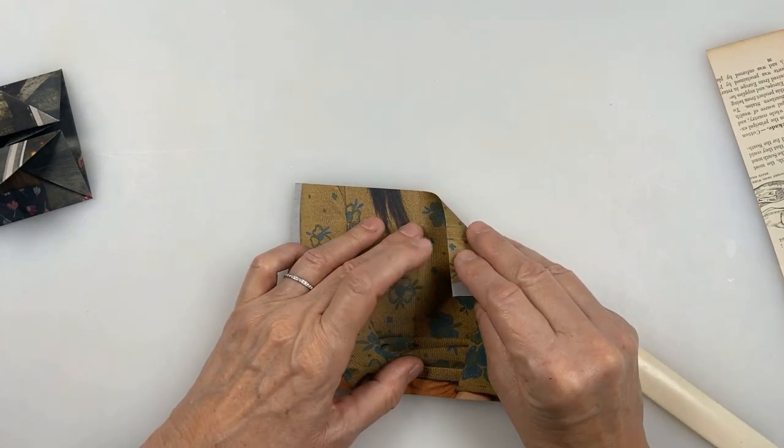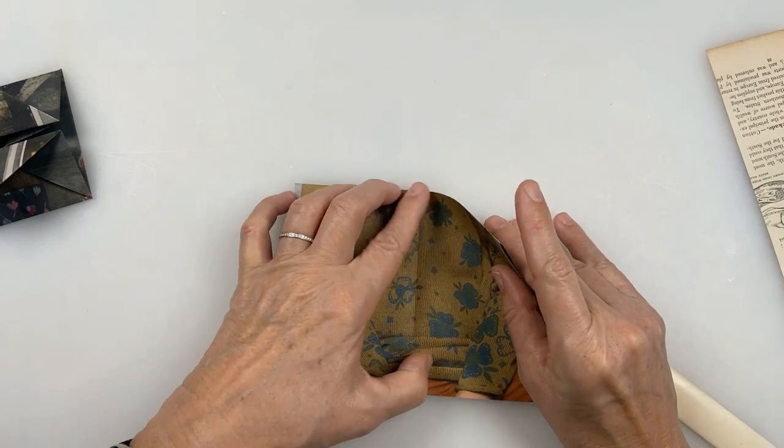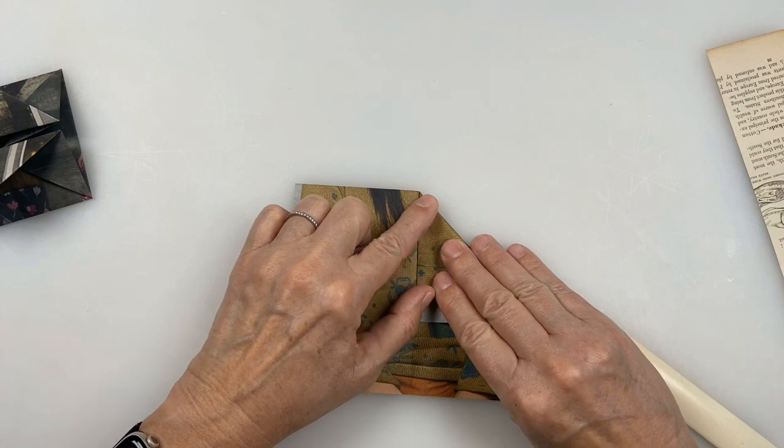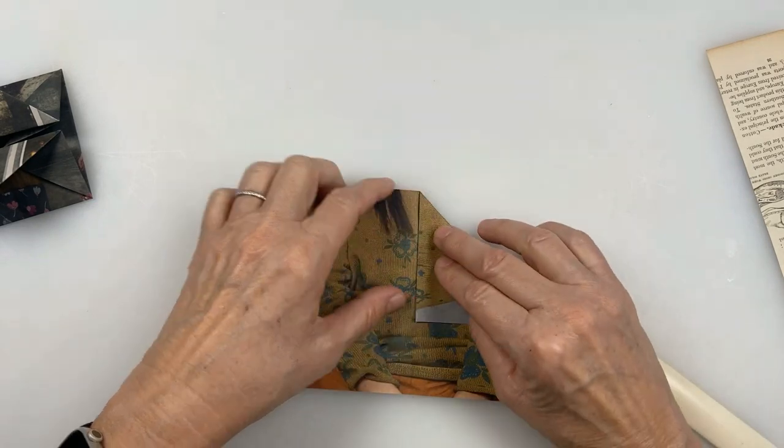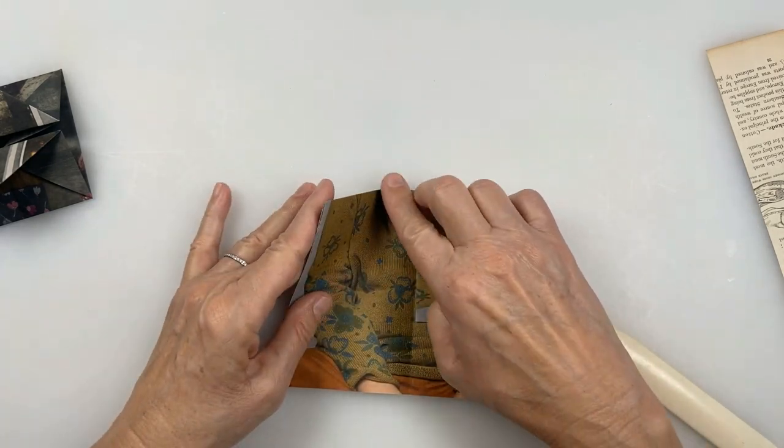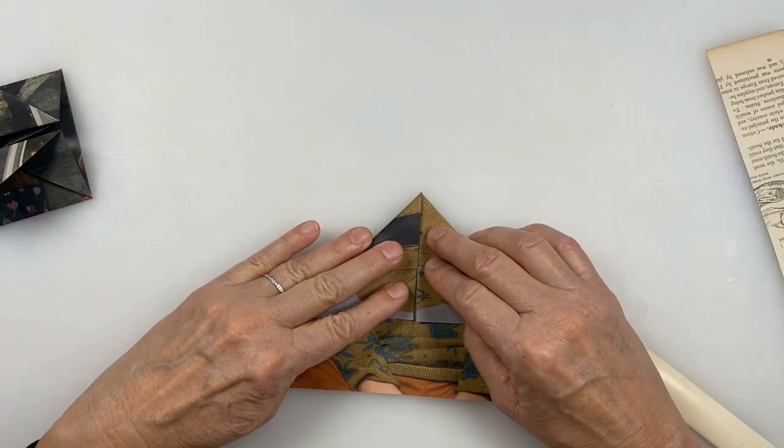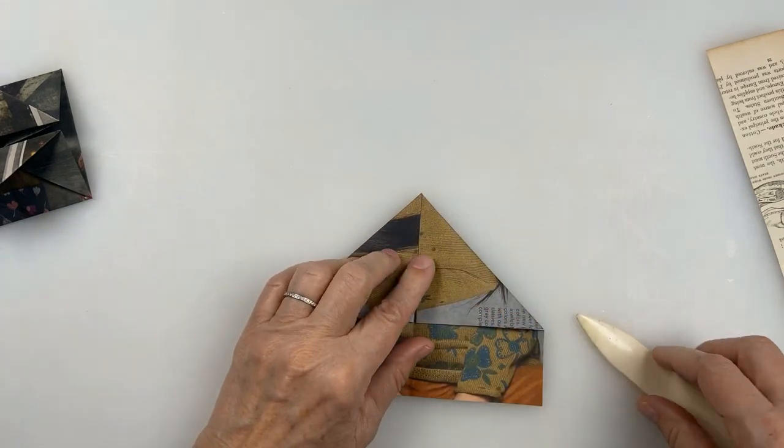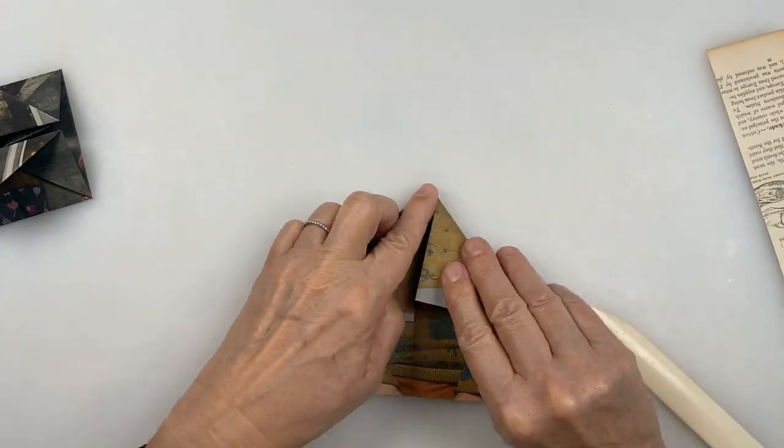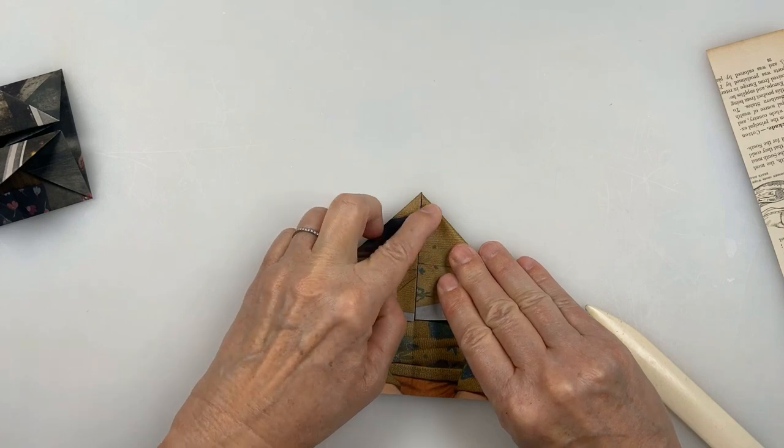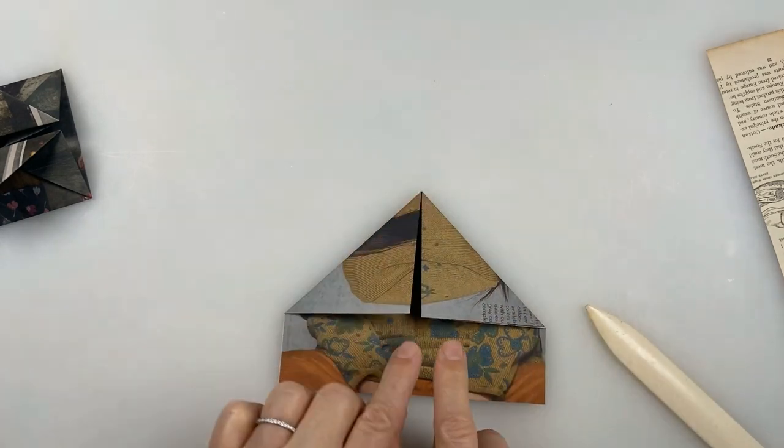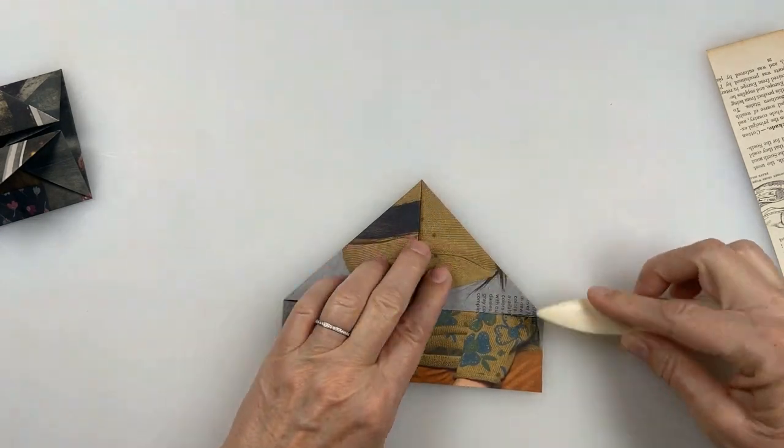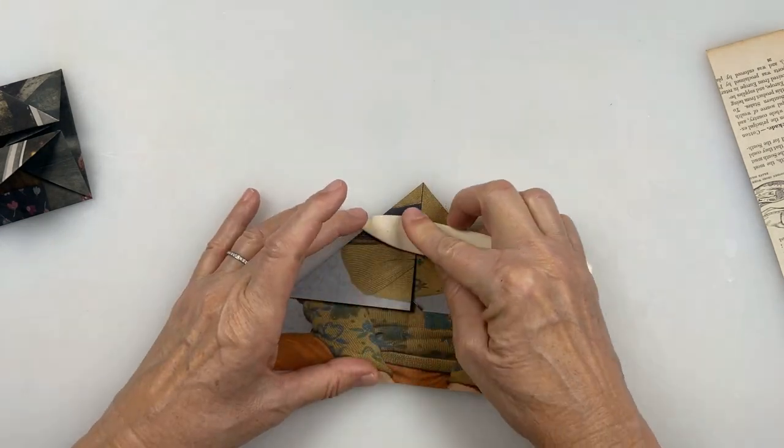I'm going to take the top edge and I'm folding it down to the center crease. And then I'm going to take the left top edge and I'm going to fold that also down to the center crease on both sides here. And if you need to adjust your fold just a little go ahead. But you want it to be nice and even at the bottom here. So now I'm just going to give it a nice crease here on both sides.